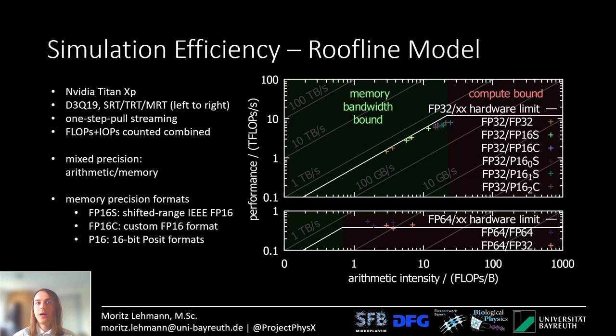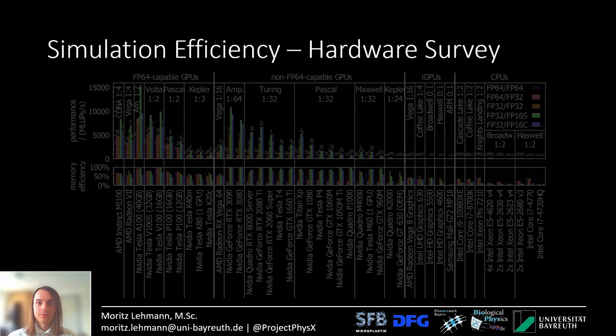As a small remark, the performance plots here were done before I switched to in-place streaming. With in-place streaming, performance is even a few percent higher because of implicit bounce-back boundaries that reduce memory bandwidth. However, memory access efficiency is a bit lower because I have to use misaligned writes.